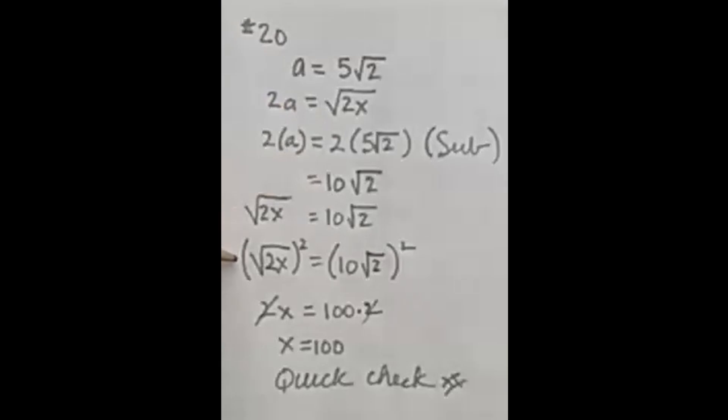In order to extract x, I take the square of both sides. That gives me 2x equals 100 times 2. And by shorthand, I'll just cancel off those two. x equals 100. And then I did a quick check to verify.